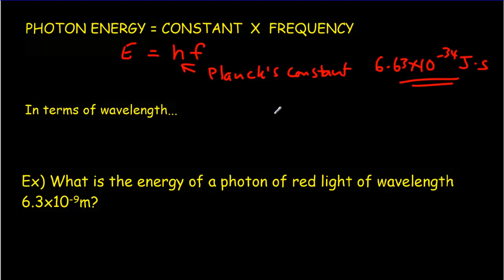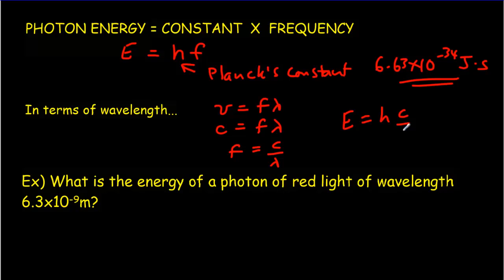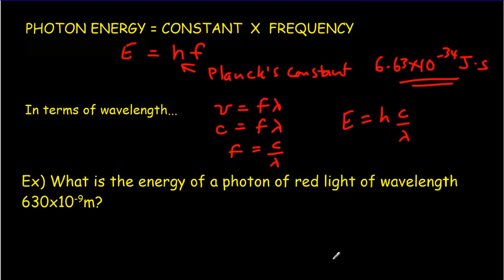We can also write the energy of the photon in terms of wavelength. The universal wave equation is v = fλ, but for electromagnetic waves they travel at the speed of light, so c = fλ. That means frequency equals c divided by wavelength, so we can write photon energy as hc divided by the wavelength of the light. If we're given either the frequency or the wavelength of electromagnetic radiation, we can always figure out the photon energy.